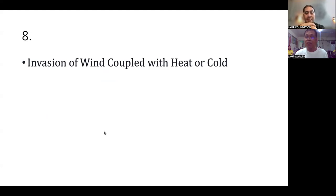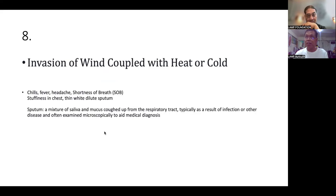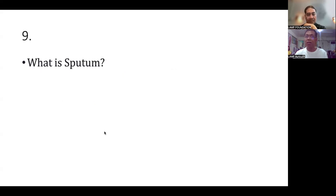And invasion of wind coupled with heat. So this time, wind heat typically affects the lung, and of course when the body is exposed to external pathogen, particularly during warmer weather or in environments where pathogens of heat are prevalent. Symptoms can be chills, headaches, sore throat, and stiffness in the chest. And of course they're going to have cough with yellow thick phlegm, headache in forehead or in temple, aversion to wind, mild sweating, red eyes or face. And the sputum is a mixture of saliva and mucous.